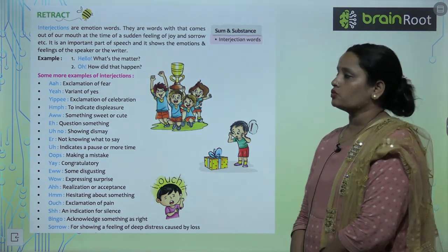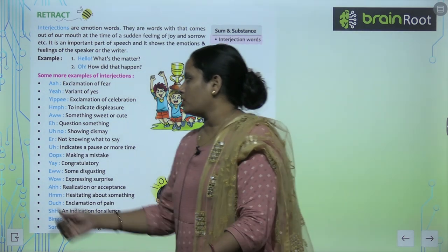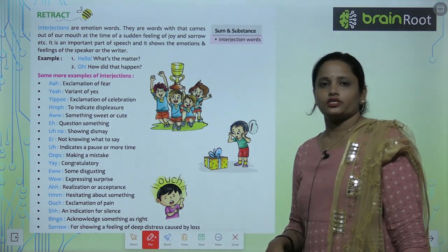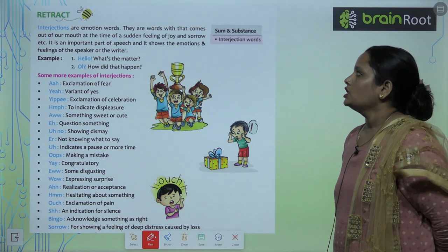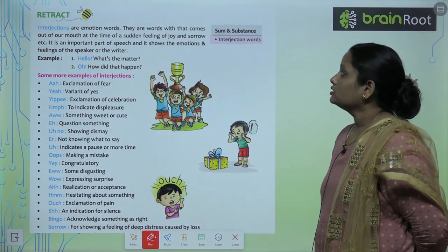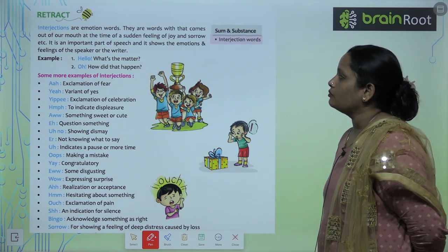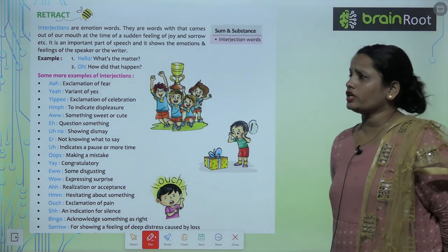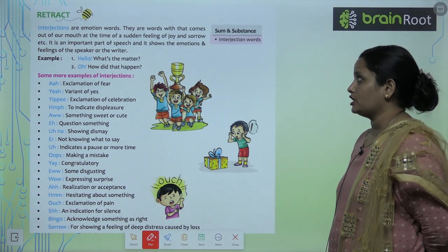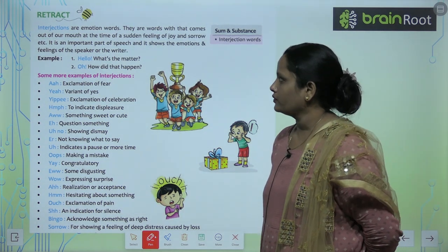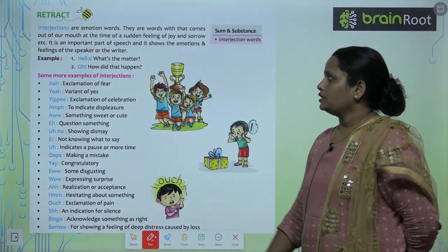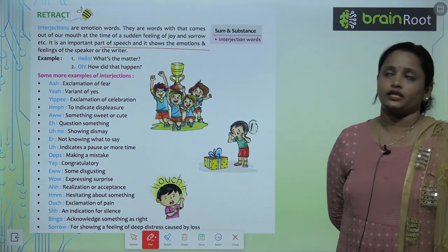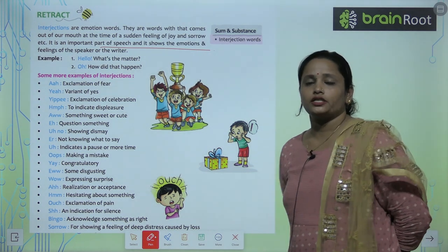Interjections are Emotion Words. You will feel a lot of emotions in your life, and interjections are used to describe them. These are words that come out of the mouth at the time of a sudden feeling of joy or sorrow. It is an important part of speech that shows the emotions and feelings of the speaker or the writer.